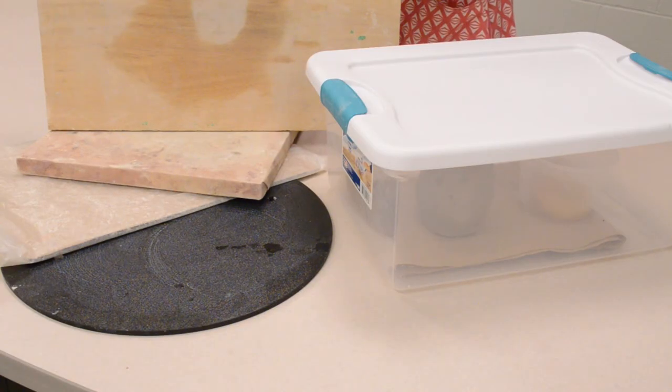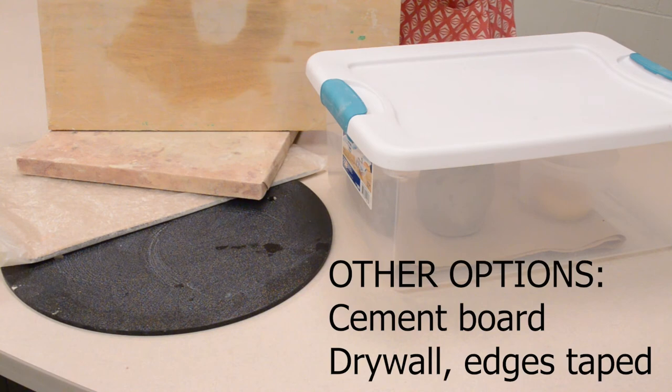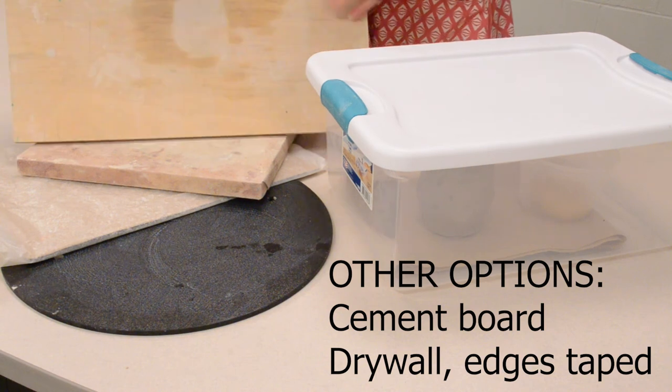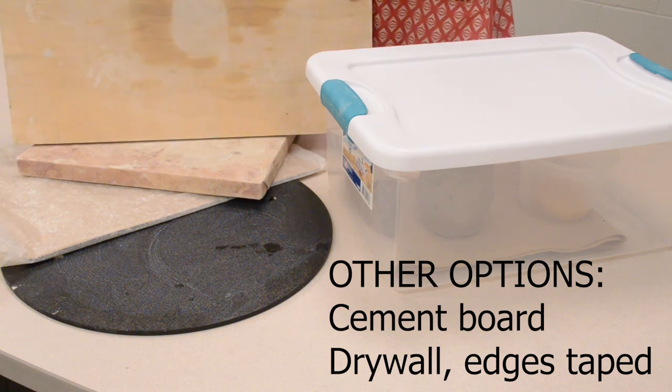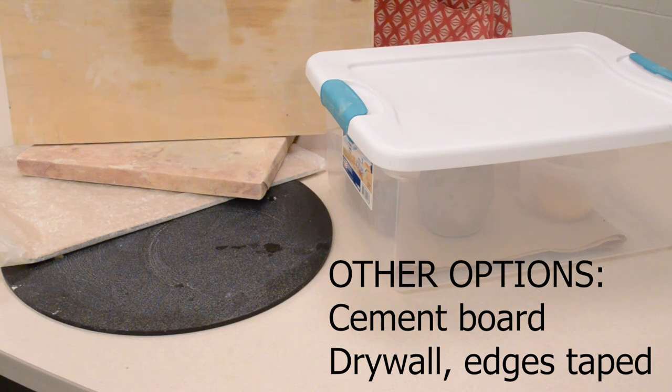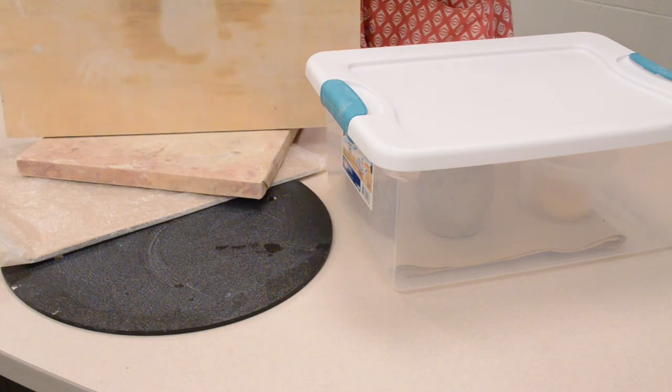Another option for a wear board is to use a cement board. Hardee backer is a type that you can find at a hardware store. You can also use a piece of drywall. If you're using drywall, be sure to tape all four sides off with duct tape or with a wider painter's tape. You don't want the sides of the drywall getting into your clay.